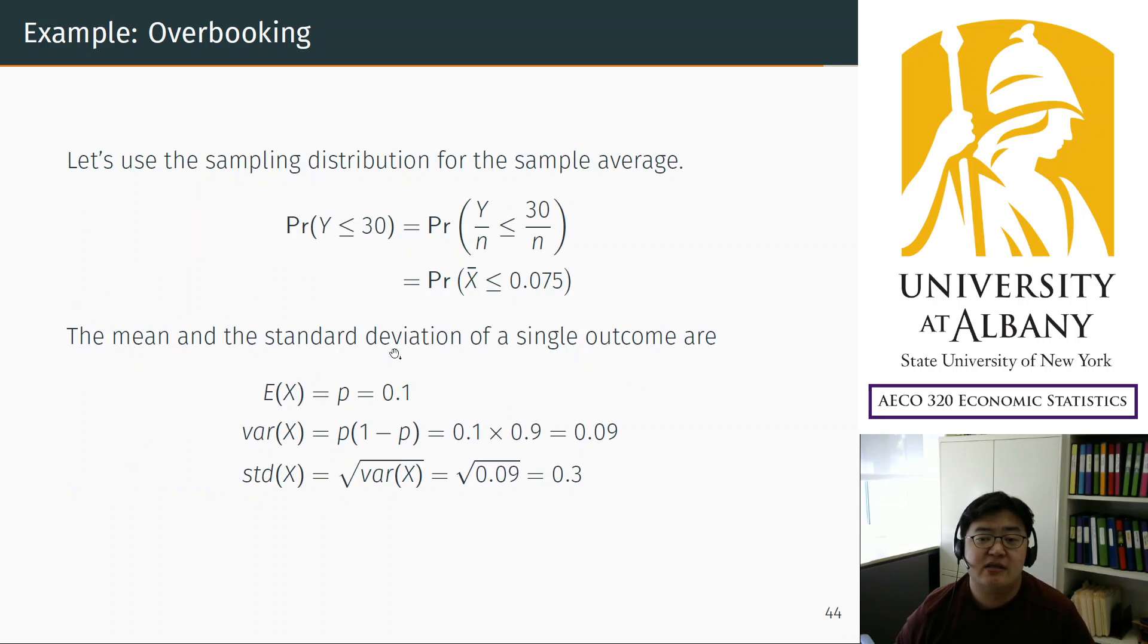On the other hand, now we will think about the same probability and approximate that probability to normal distribution. To do that, first we need sample average X-bar. And we know the relationship between Y and X-bar. Divide Y by n so that we have X-bar. And when you do that, you have to do the same thing on the counterpart of the inequality to balance out the inequality. So the other side becomes 30 over n. So X-bar, the sample average, must be less than 0.075.